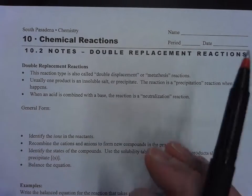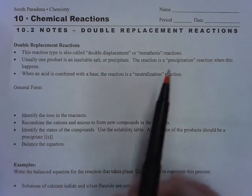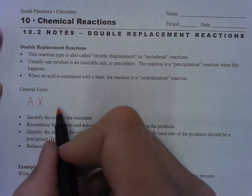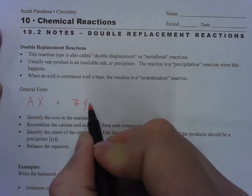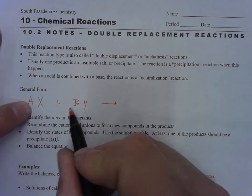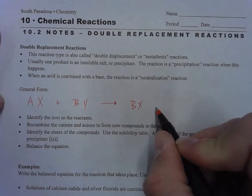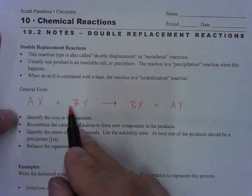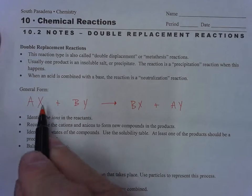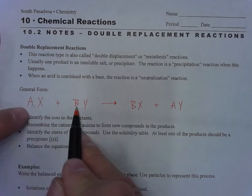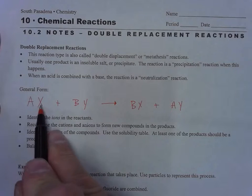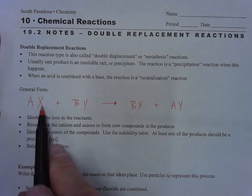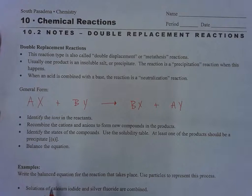The general form of a double replacement reaction looks like this: AX + BY yields BX + AY. What happens is these two switch places. A switches with B. These are both positives, usually cations. Positive-negative, positive-negative. The positives switch, or you can think of it as metal-nonmetal and metal-nonmetal, not always but a lot of times.